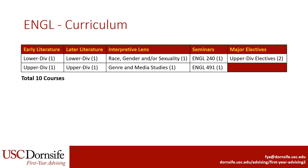Next, we have the curriculum for the English Literature major. This major also requires 10 courses, no more than four of which may be at the lower division 100 or 200 level. Like the Creative Writing major, this major can also be broken down into five requirement categories.